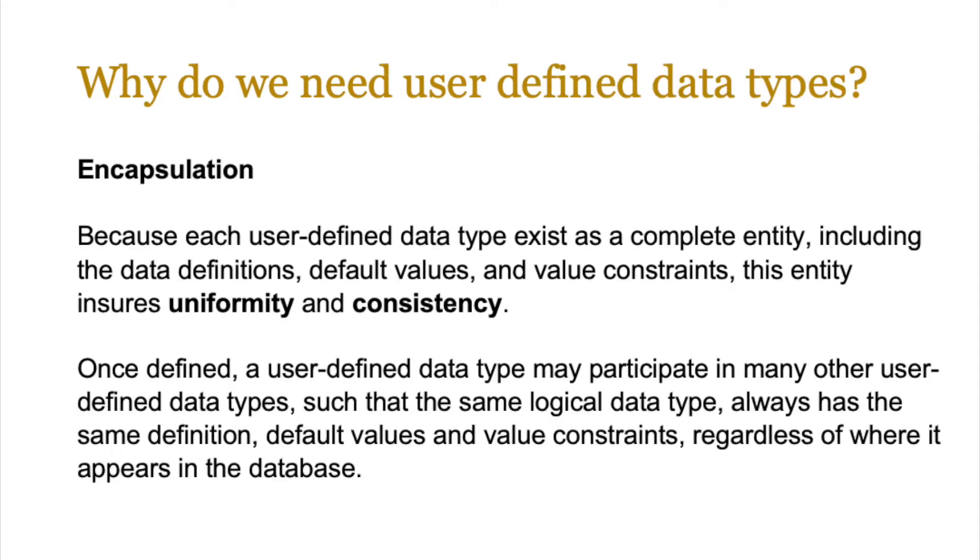So let's start by looking at why we actually need user-defined data types. The first one is encapsulation and encapsulation is basically the process of putting data and methods together as a single unit. Normally this is used for classes and objects and things like that. But think about it this way, in our inventory system for that particular game, that particular character in the game, you will have a lot of different types of data types like integer for hit points, maybe string or text for the name of the equipment. And you're encapsulating, you're bringing all of that different data types together and that's one of the reasons why we use it. And because each user-defined data type then exists as a complete entity including default values, data definitions and any particular constraints we put in there, this ensures uniformity and consistency.